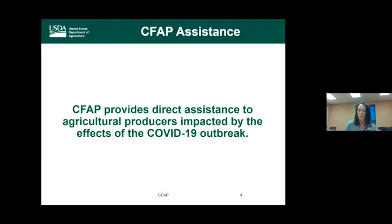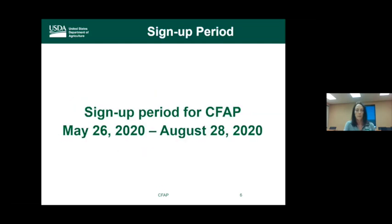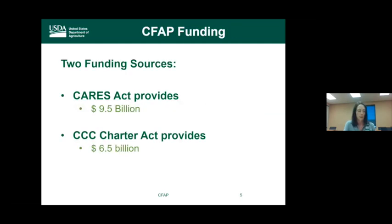CFAP provides direct assistance to agricultural producers impacted by COVID-19. There are two funding sources: the CARES Act, with $9.5 billion allocated for losses due to price declines between mid-January and mid-April 2020, and CCC Charter funds, with $6.5 billion allocated to assist producers based on costs of dealing with ongoing market disruptions and transitioning back to an orderly marketing system.